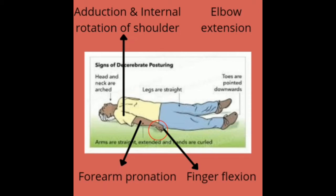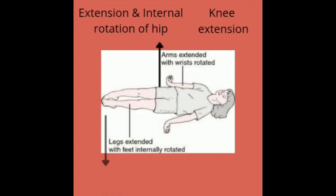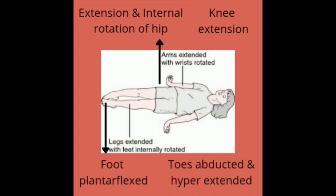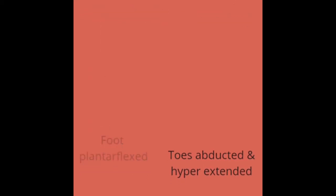At the lower limb level, the hip is extended and internally rotated. The knee is extended. The foot is plantar flexed. The toes are abducted and hyper-extended. This is what decerebrate posturing looks like.